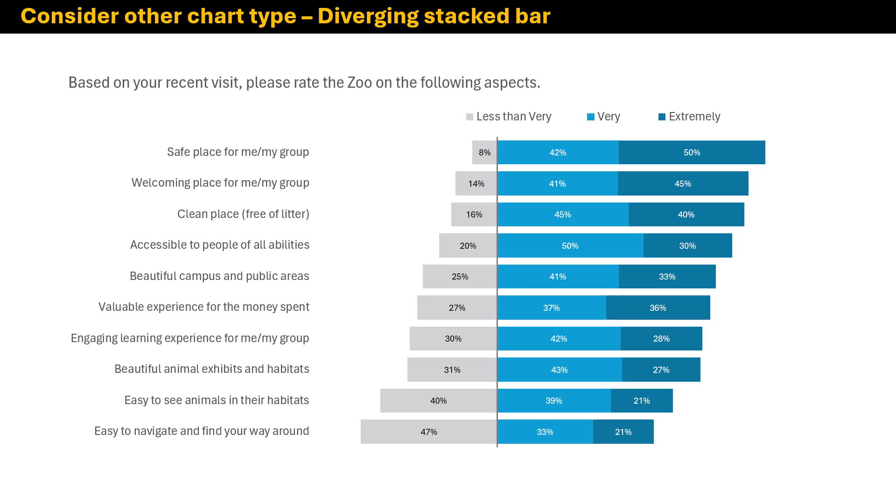You can really get a good sense of the items that were rated lower — like easy to see animals and easy to navigate and find their way home. In this case, I also brought back the y-axis line, but now instead of being along the right edge of the item labels, it's at the diverging point — the cut point — right at less-than-very. I think that looks pretty nice.